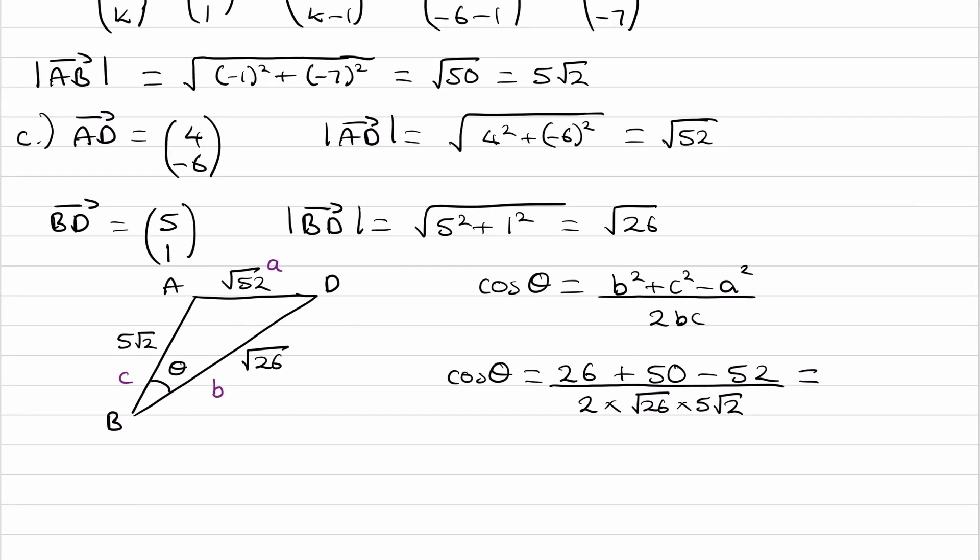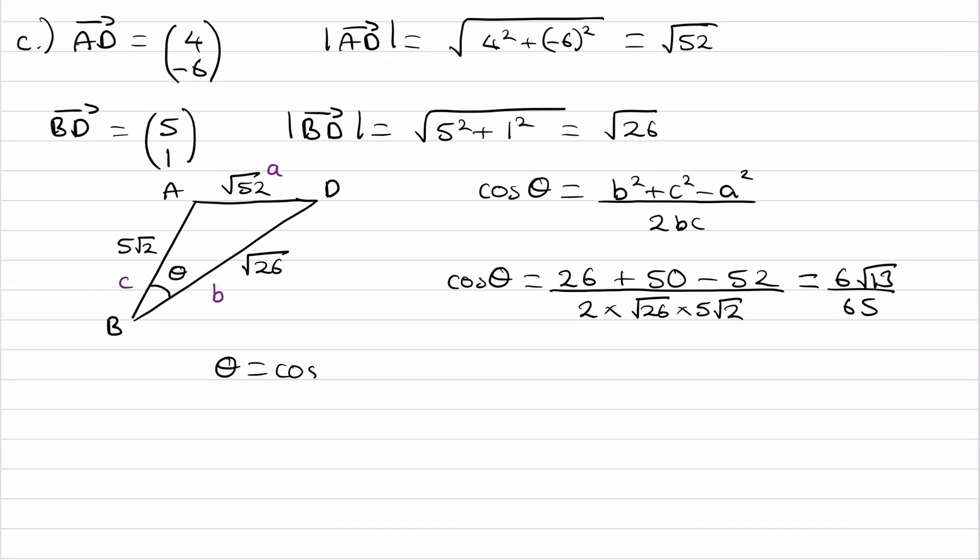Type that in, and you end up with 6 root 13 all over 65. And then finally, inverse cos, and then we get our answer. So inverse cos of 6 root 13 over 65, and this gives us 70.6. Thanks.